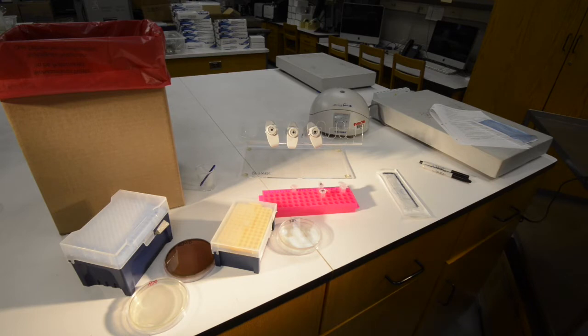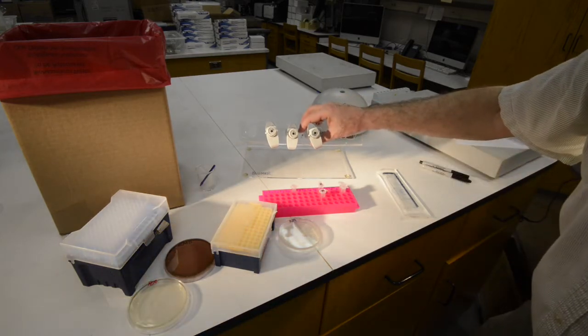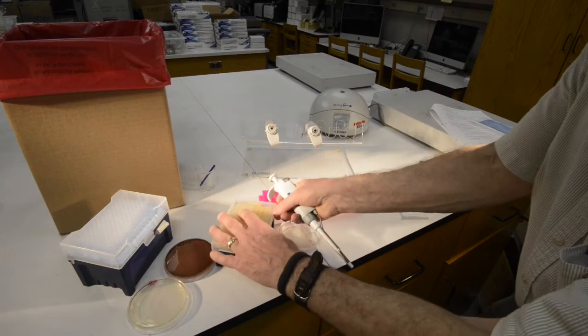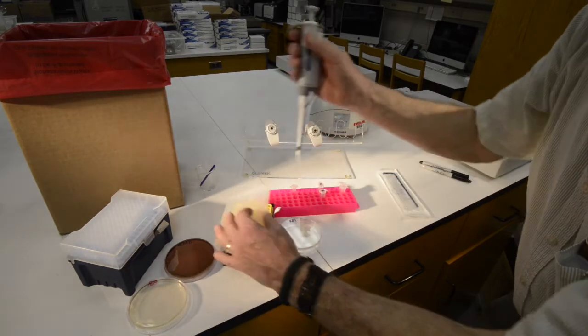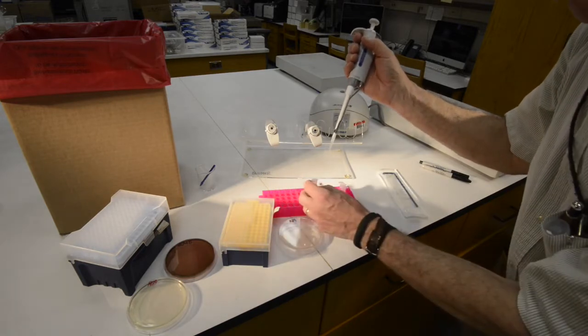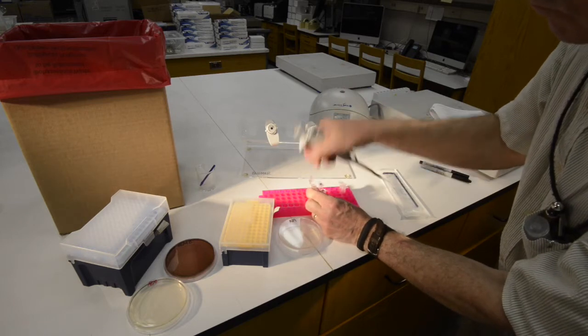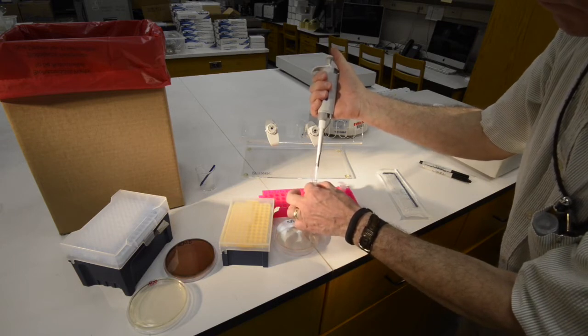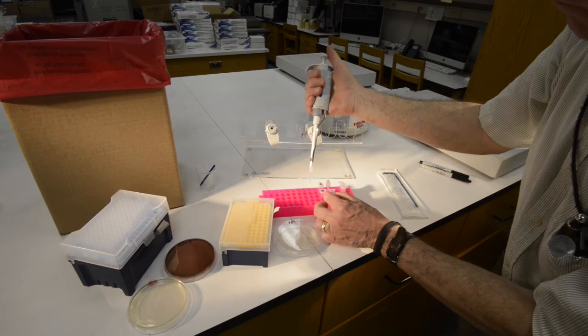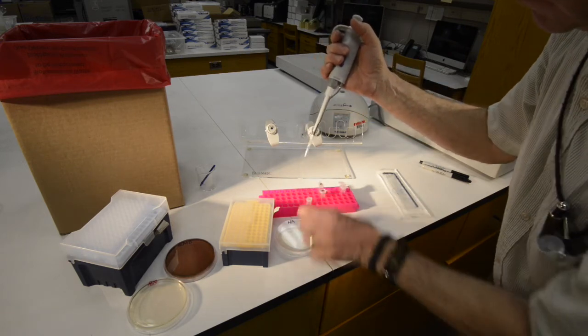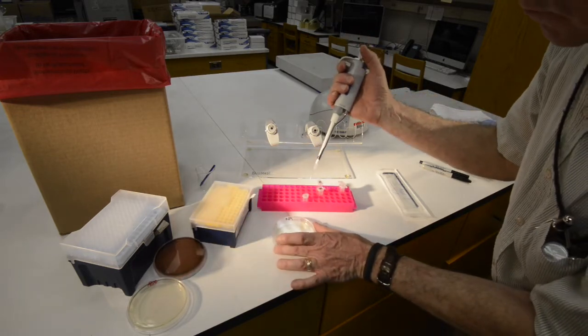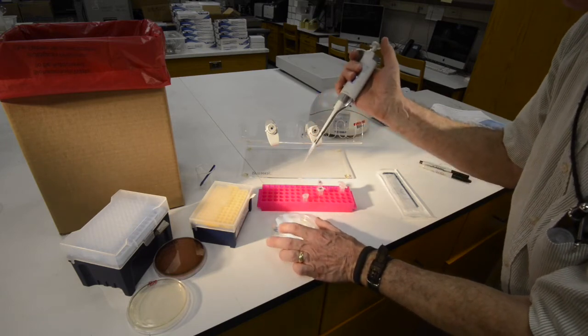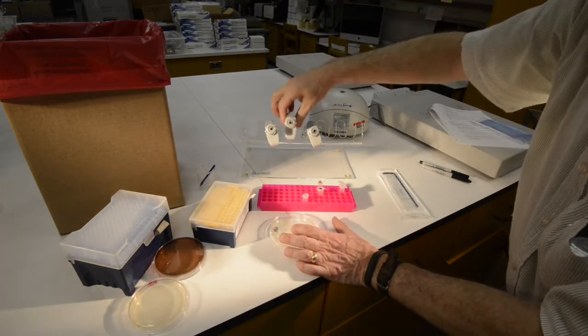In each case, whether you're plating full strength or one-tenth strength, have those dilutions ready to go. The plating involves putting 100 microliters of the liquid containing the microbiome bacteria onto a plate and spreading that liquid around using a sterile spreader. Here I'm pulling 100 microliters from a tube. Remember to turn the plate right side up and then squirt that 100 microliters directly onto the agar without touching the agar with the tip.